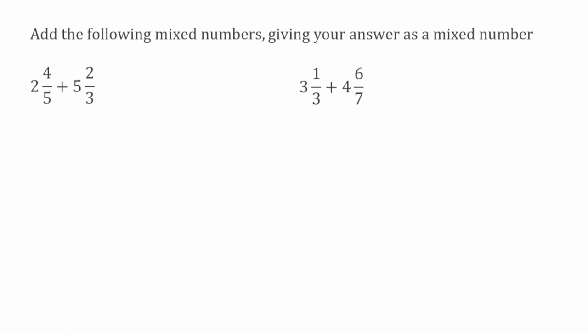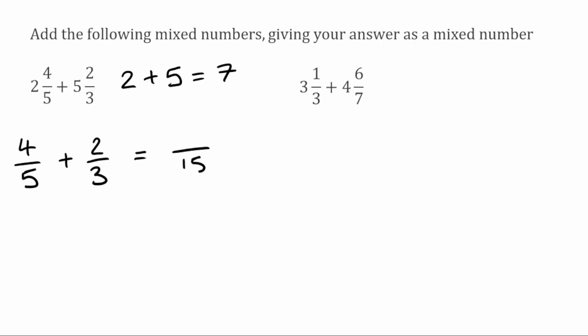For this first question, we've got two and four fifths, add five and two thirds. So we're going to add the whole number parts first: two add five gives us seven. We're then going to add the fractions: four over five add two over three. We want a common denominator, so the lowest common multiple of five and three is fifteen. So we're going to have two fractions over fifteen. To get fifteen, we multiply the five by three, so four times three is twelve.